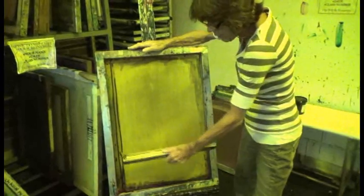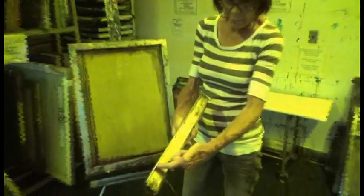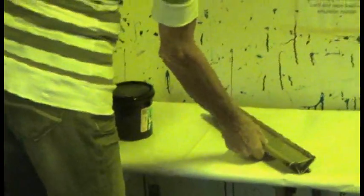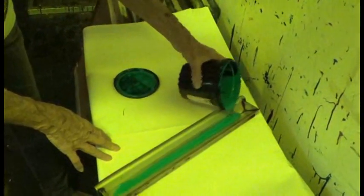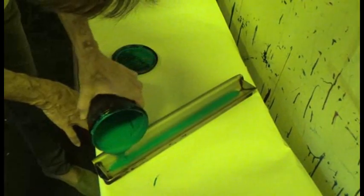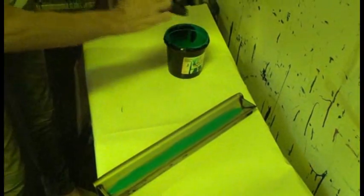This scoop coater will work fine. It has a coating edge and an edge where you can hold it. The next step is to put some emulsion into the scoop coater. These are made so they'll sit on the table fairly stable. Very carefully, we're going to fill the trough with enough emulsion to coat the screen. It's not going to require a whole lot, and we always keep the container closed.